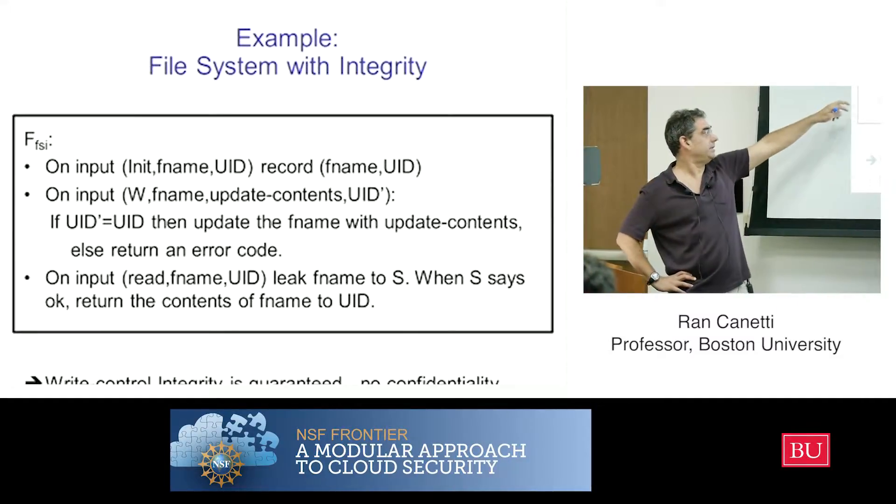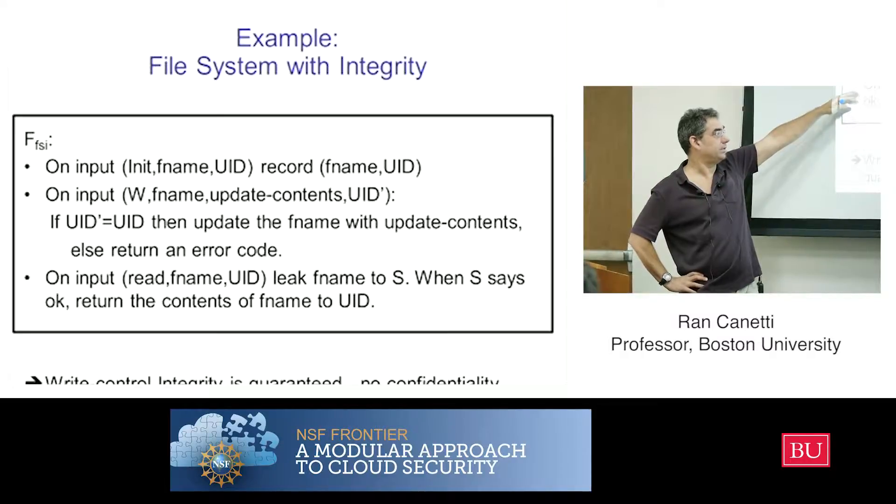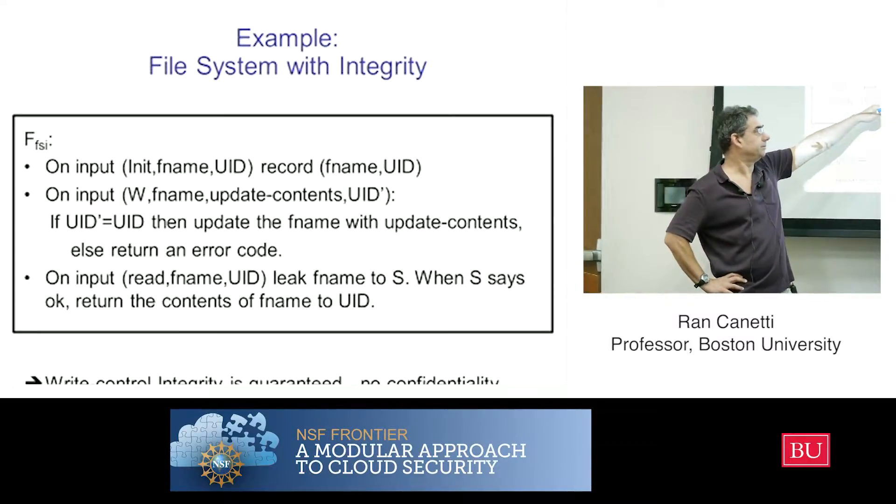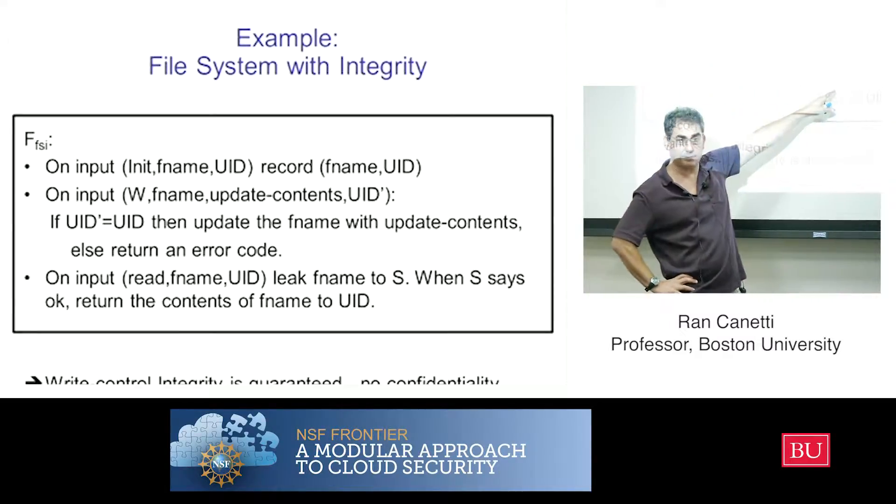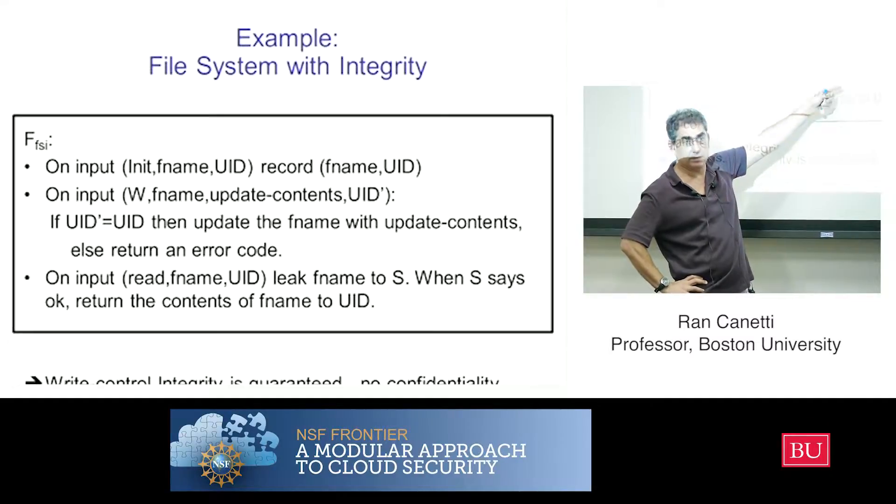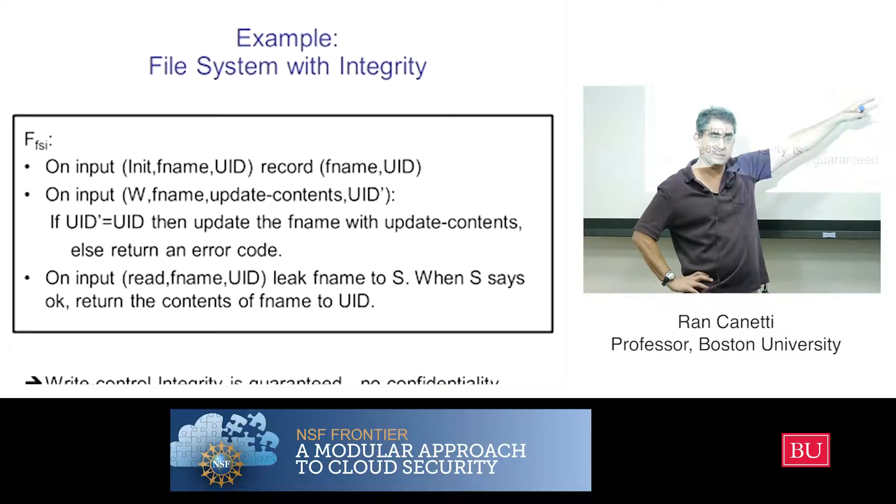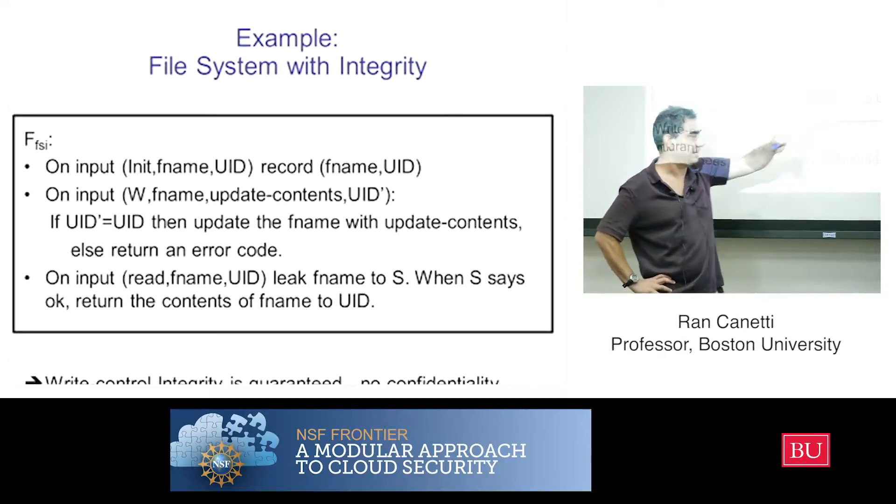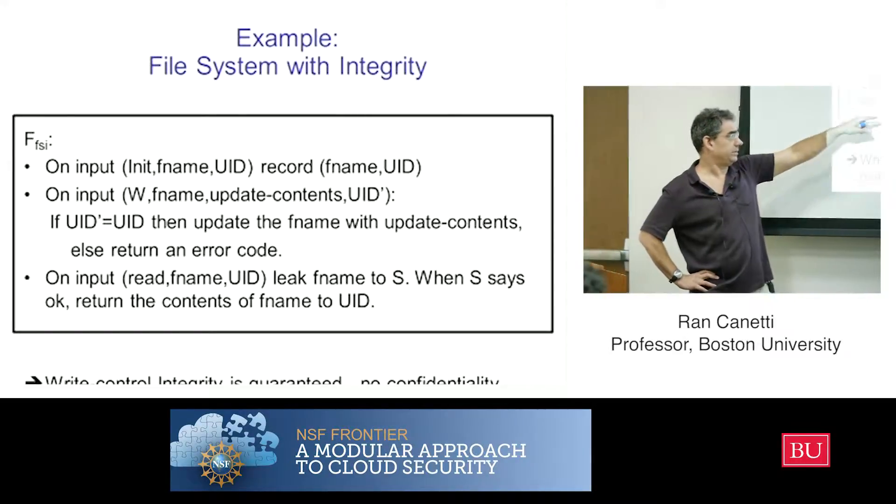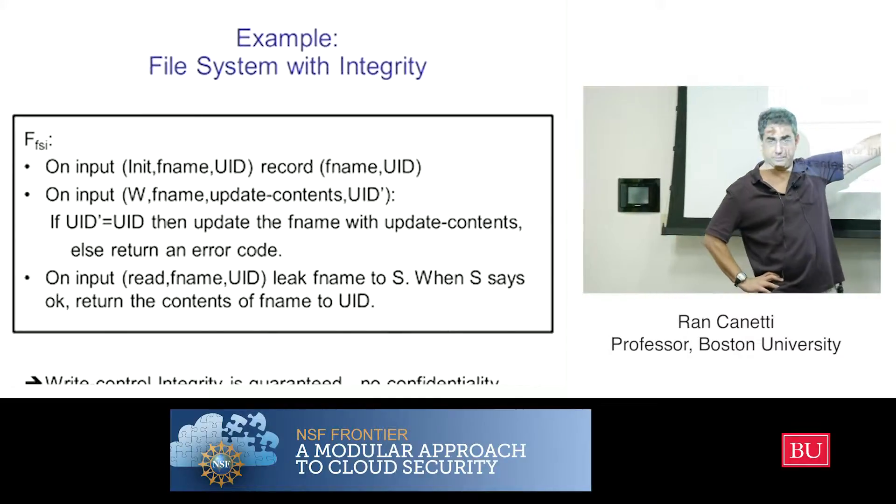And when I get an input to read a filename, then I'm going to leak it to S, only when I read. This is the choice here of the functionality, right? You can do it in other ways. Then I actually leak it to S, and when S says okay, then I return the content of the filename.